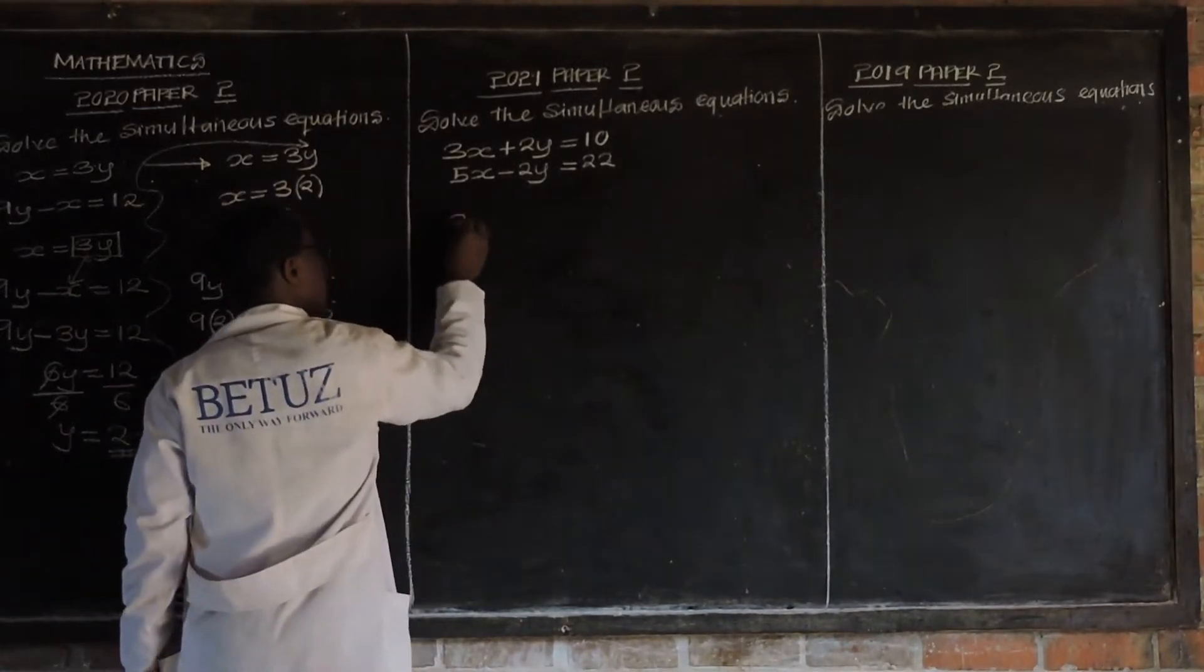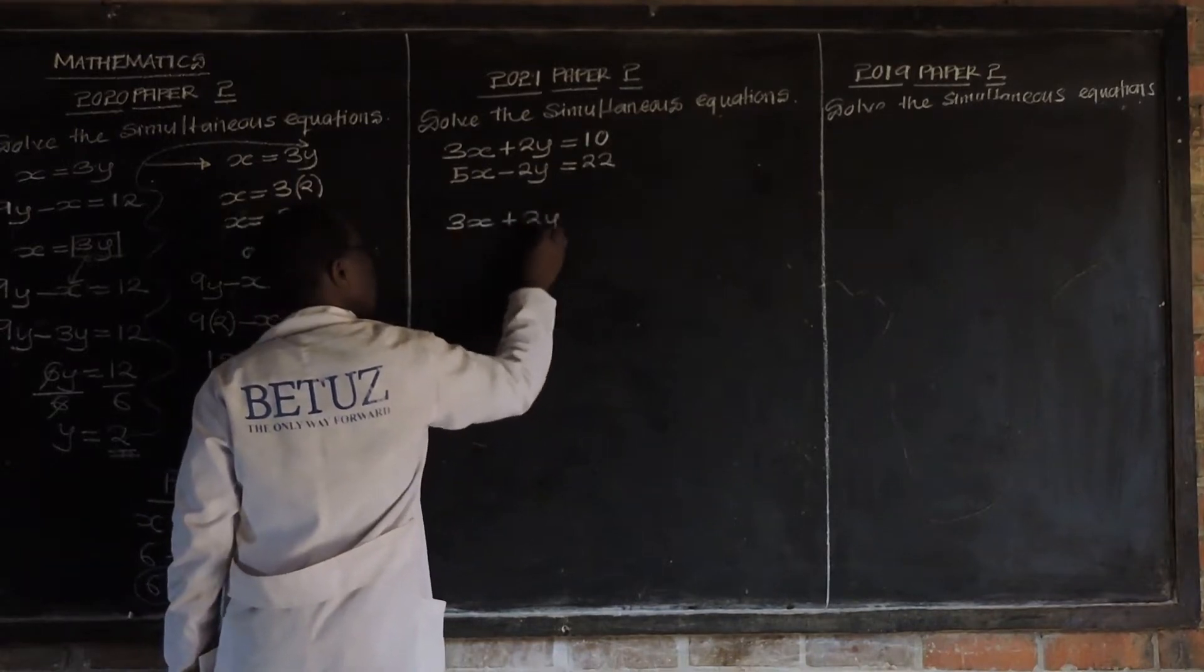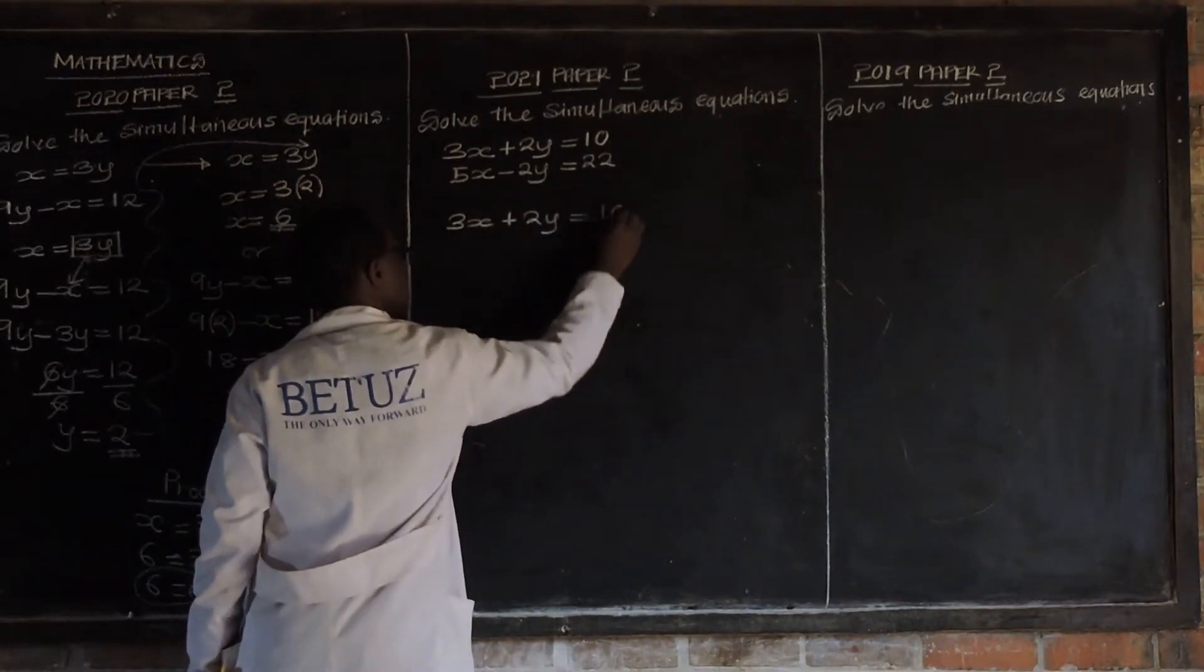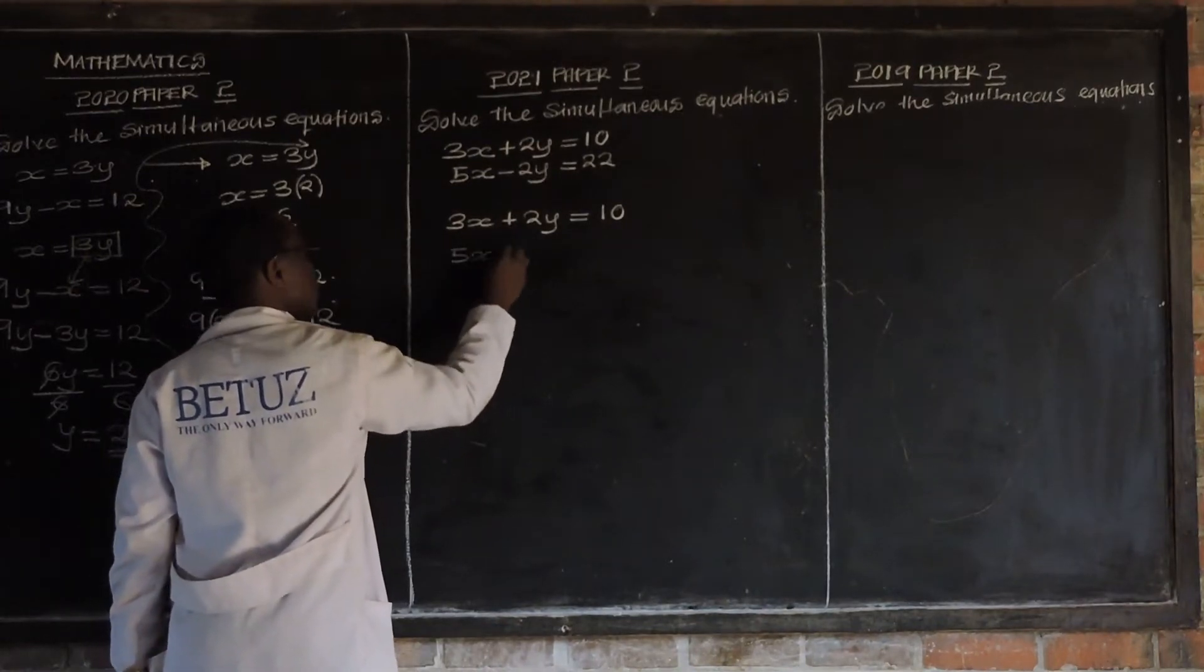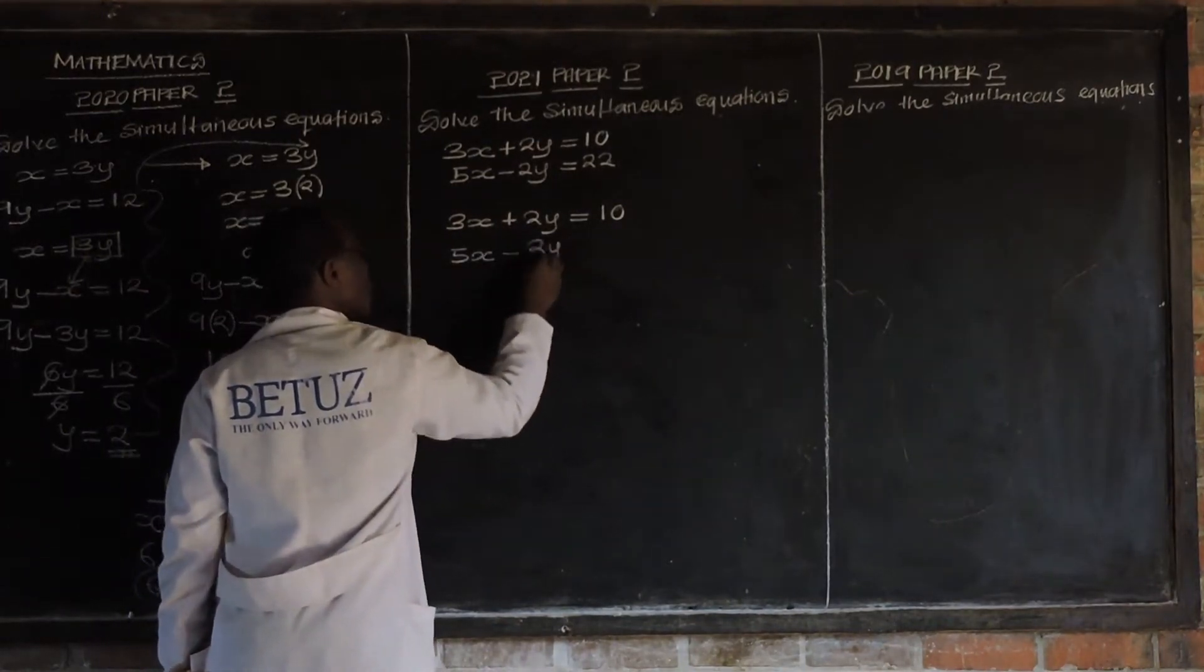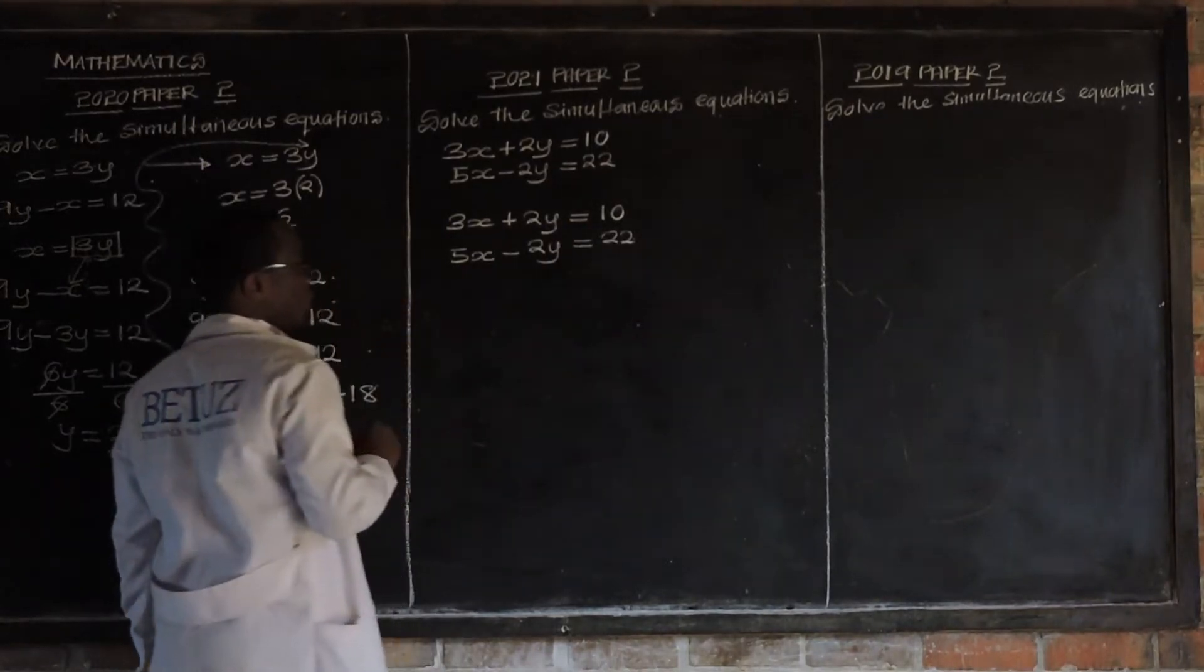The first one is given by 3x plus 2y is equal to 10. Then the other one is 5x minus 2y is equal to 22, very good.